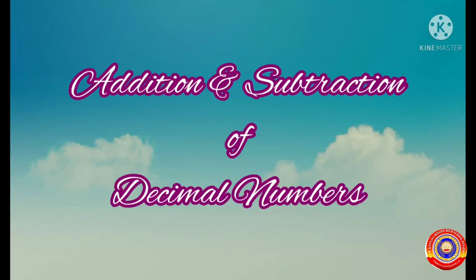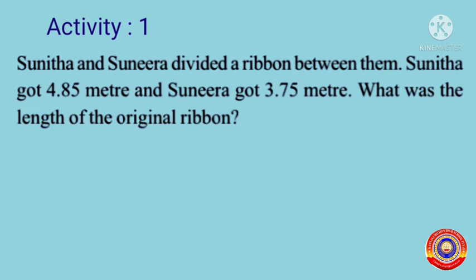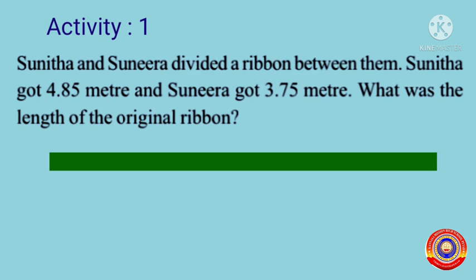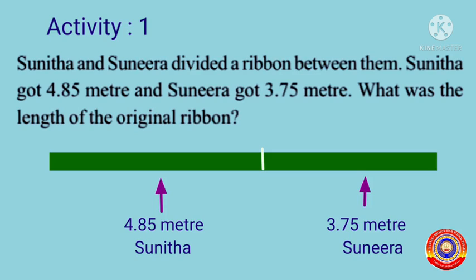Let's do some activities related with addition and subtraction of decimal numbers. Activity number one: Sunita and Sunira divided a ribbon between them. Sunita got 4.85 meters and Sunira got 3.75 meters. Here is a ribbon — on cutting this ribbon into two parts, Sunita got 4.85 meters and Sunira got 3.75 meters.